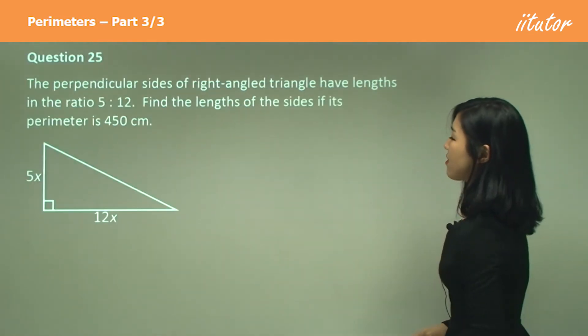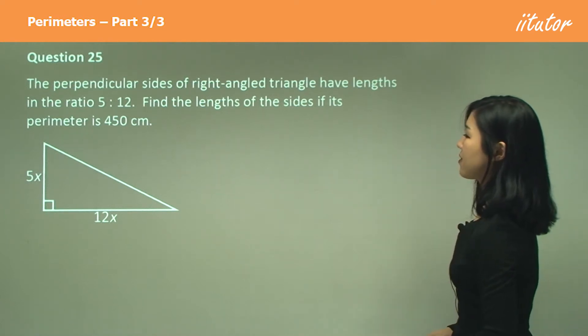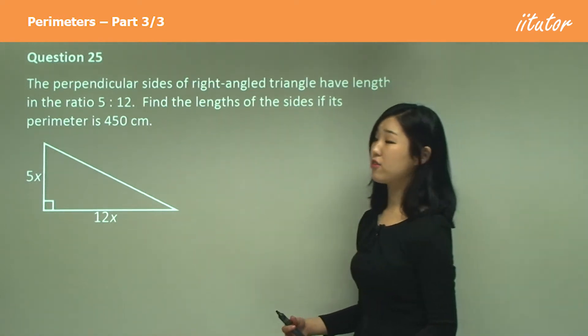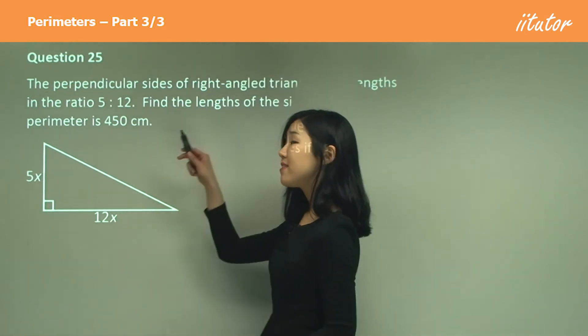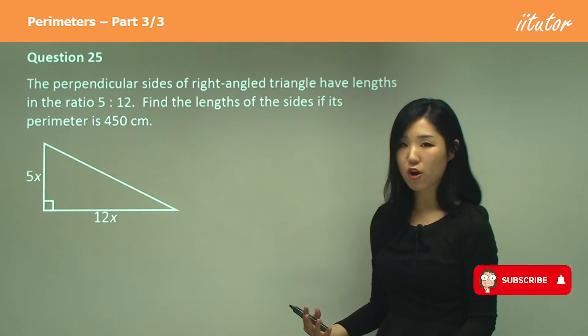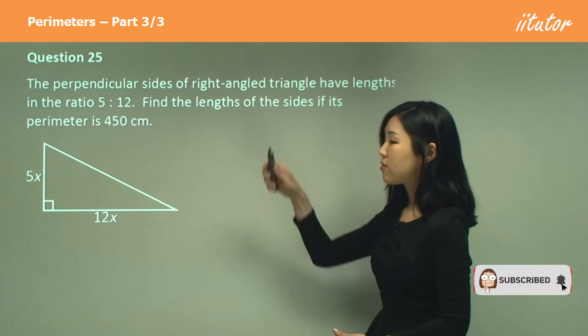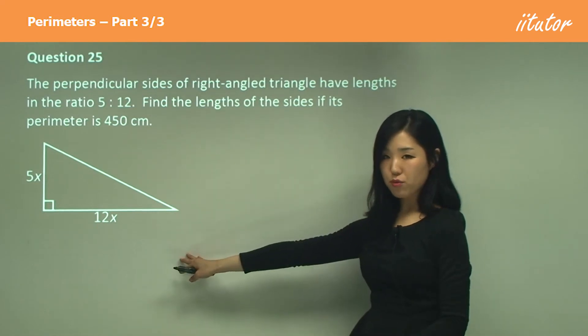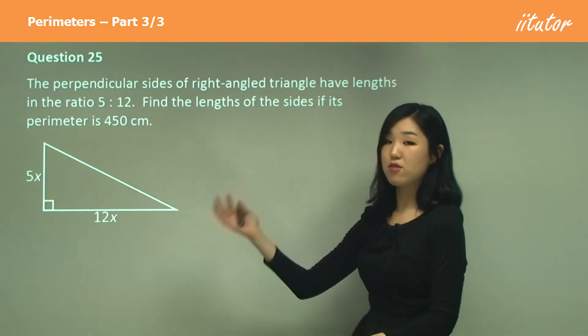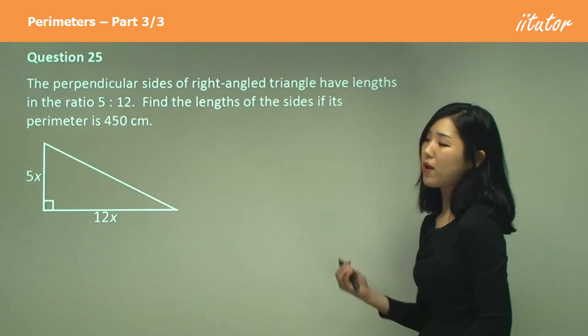The perpendicular sides of a right angle triangle have lengths in the ratio 5 to 12. That's why they put 5x and 12x. It's not going to be exactly 5 and 12 in length. The sides might be 5 times 2 and 12 times 2, or 5 times 5 and 12 times 5, depending on what x is.